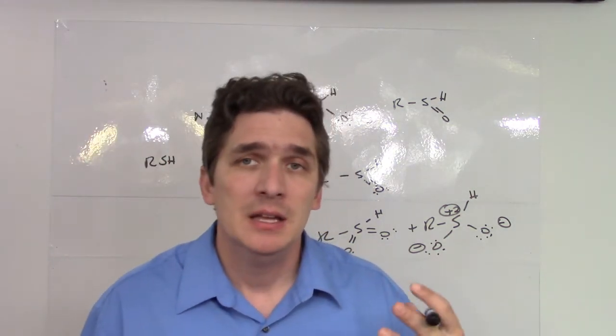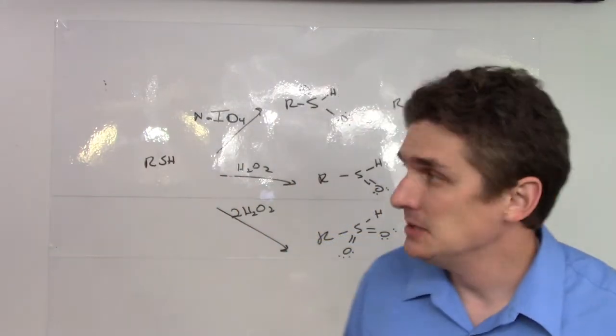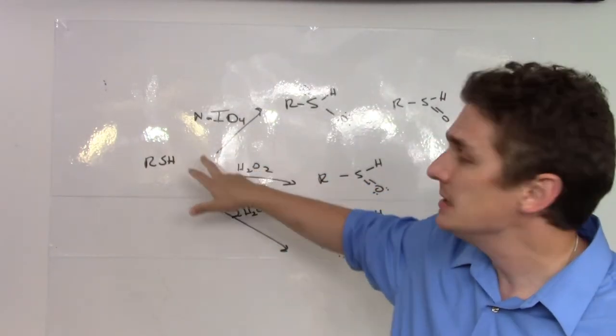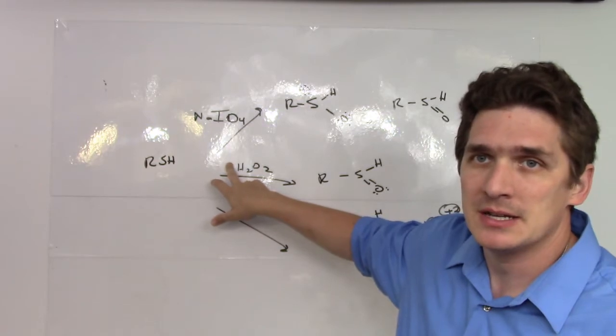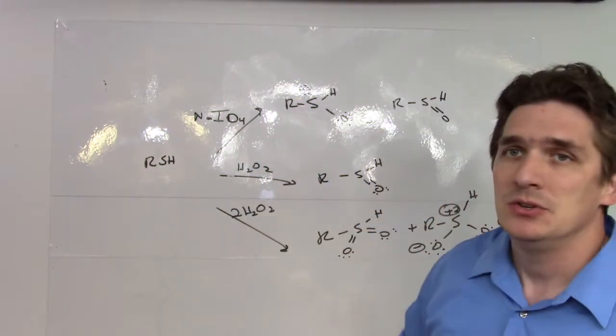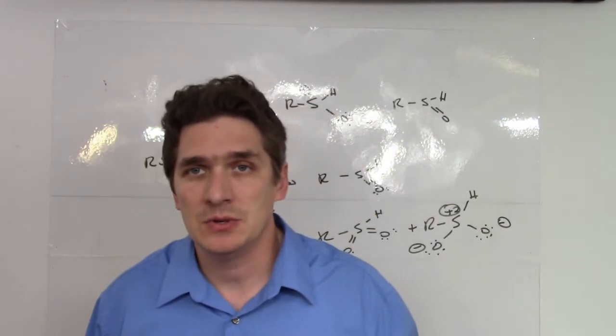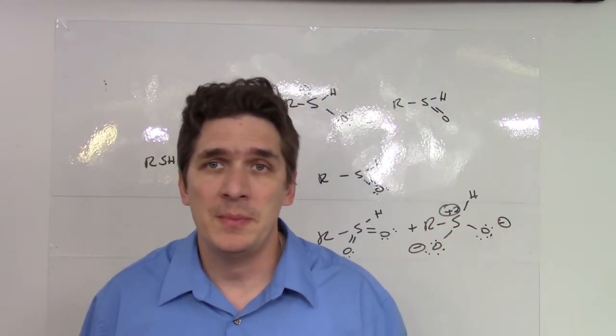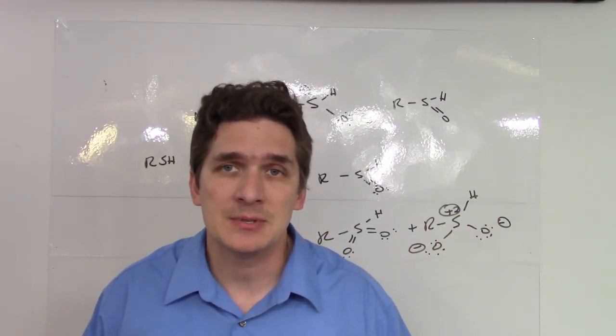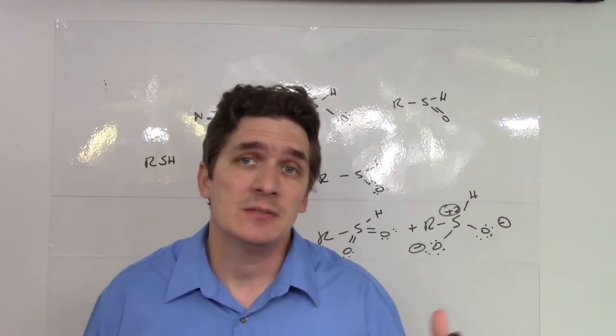Big point here. If you've got your sulfur complex and you want to make a sulfonyl, you can use sodium periodate or one equivalent of hydrogen peroxide. If you want to get the double oxygenated sulfur species, you're going to work with two equivalents of H2O2. And from there, you should basically be set in terms of the types of sulfur compounds you can make for organic complexes.